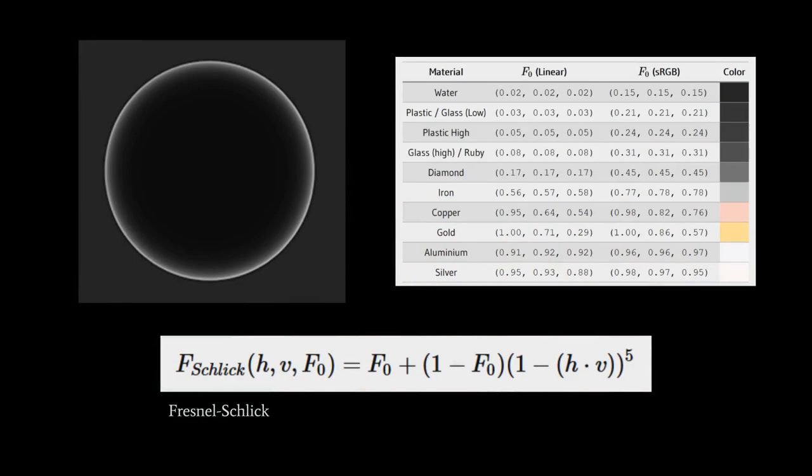Before looking at the code, there are a few key formulas we're going to employ. The first is an approximation of the Fresnel effect called Fresnel-Schlick. It takes in three parameters. H is the bisecting vector between V and the vector to the light. And then F sub zero, we can call that the base reflectivity.